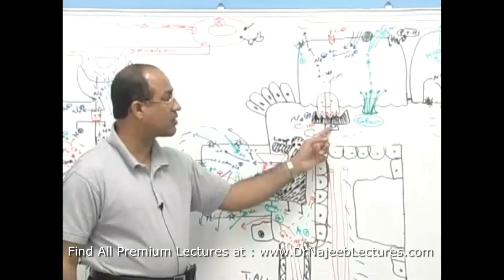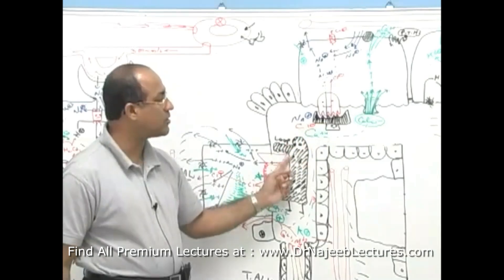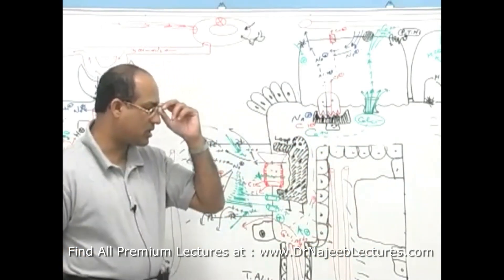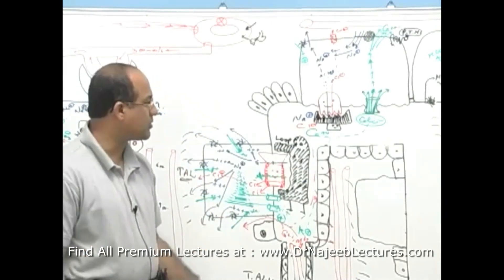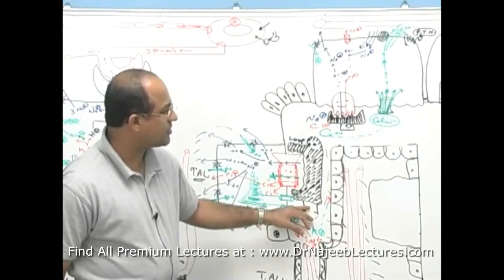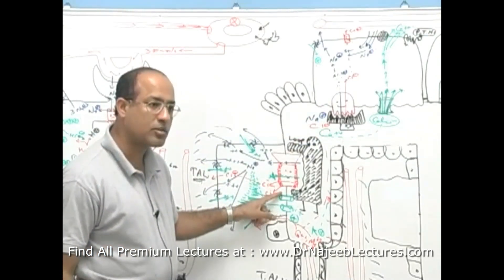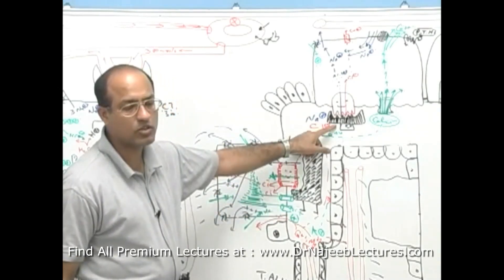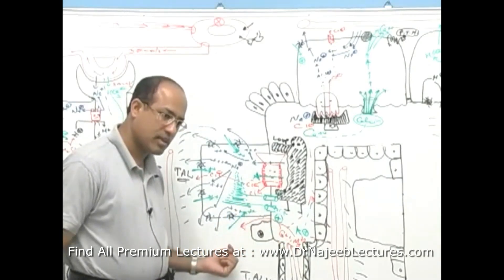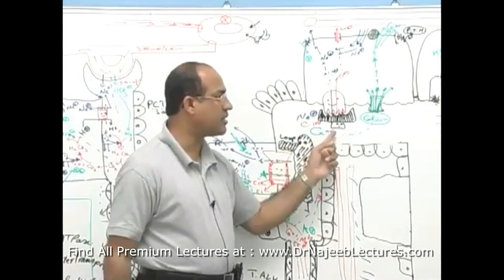In summary: furosemide and thiazides both work on the luminal side, both act on integral proteins concerned with sodium absorption, both produce natriuresis, diuresis, and kaliuresis. But a very important difference — loop diuretics waste calcium, while thiazides retain calcium. Furosemide works on the thick ascending limb of the loop of Henle via the sodium-potassium-2-chloride co-transporter; thiazide works on the distal convoluted tubule via the sodium-chloride transporter. Furosemide is a strong diuretic; thiazide is a mild-to-moderate diuretic.